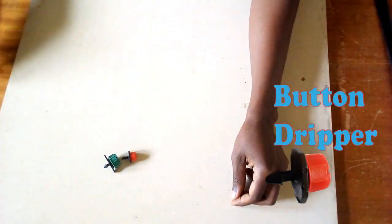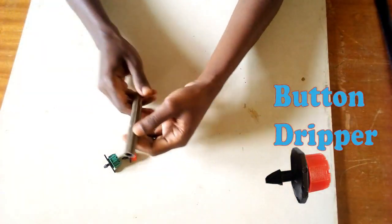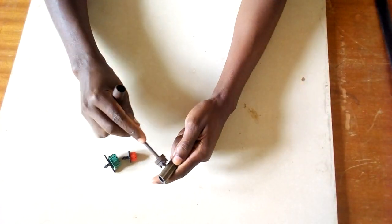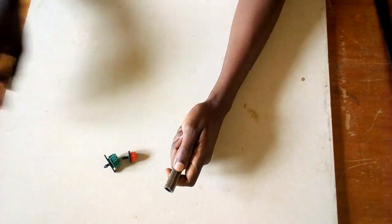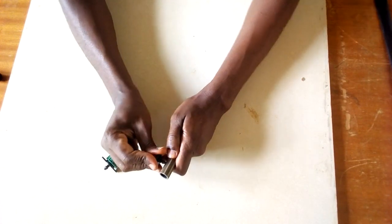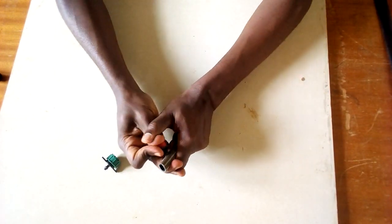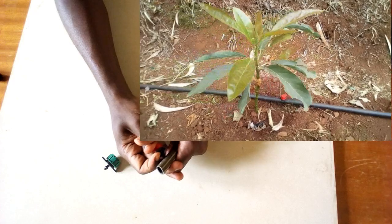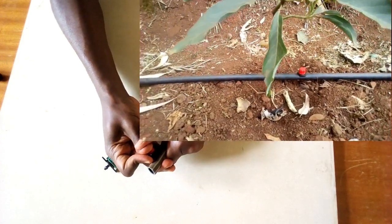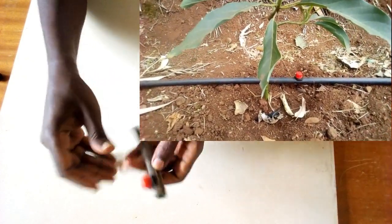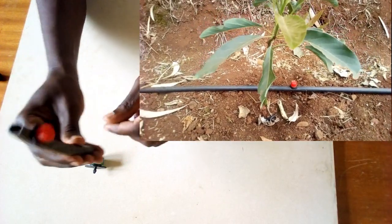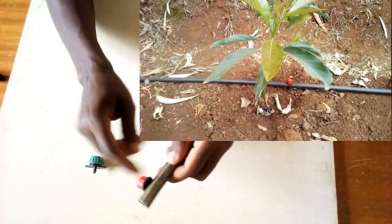Here, I have two button emitters, red and green. How do you fix them? These are fixed on a 16 mm HDPE line, just like that. This is a common irrigation system in large fruit tree orchards.